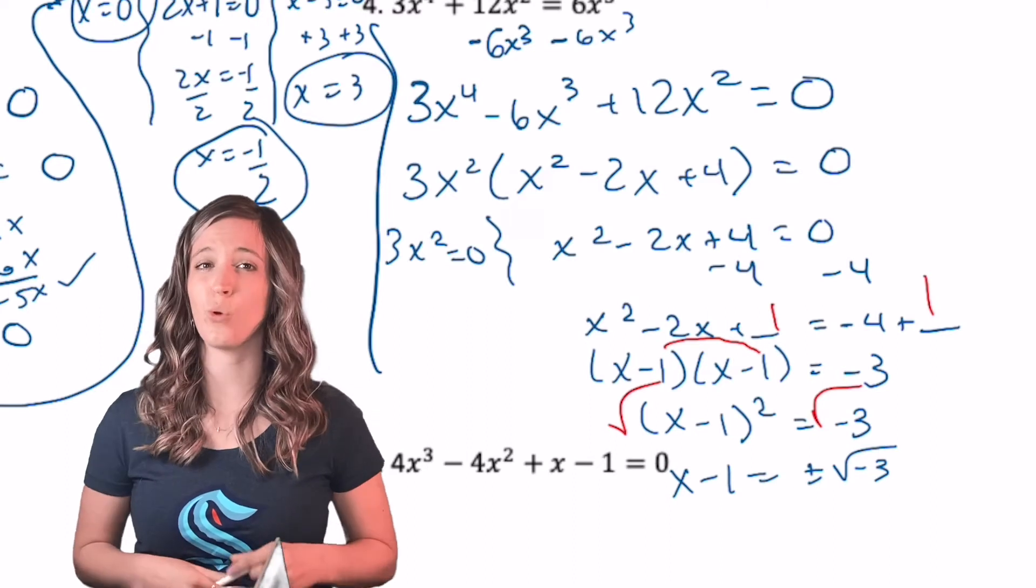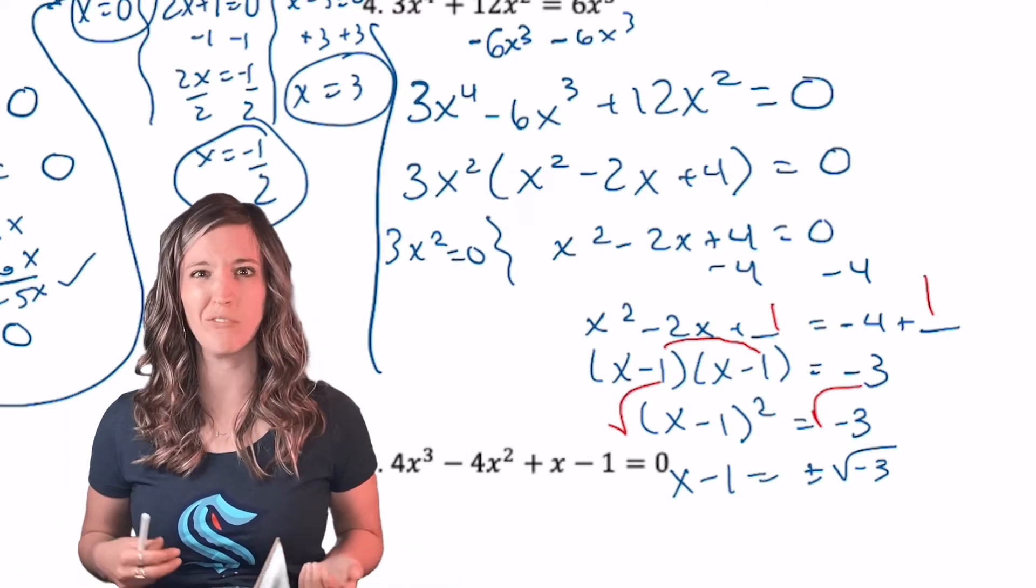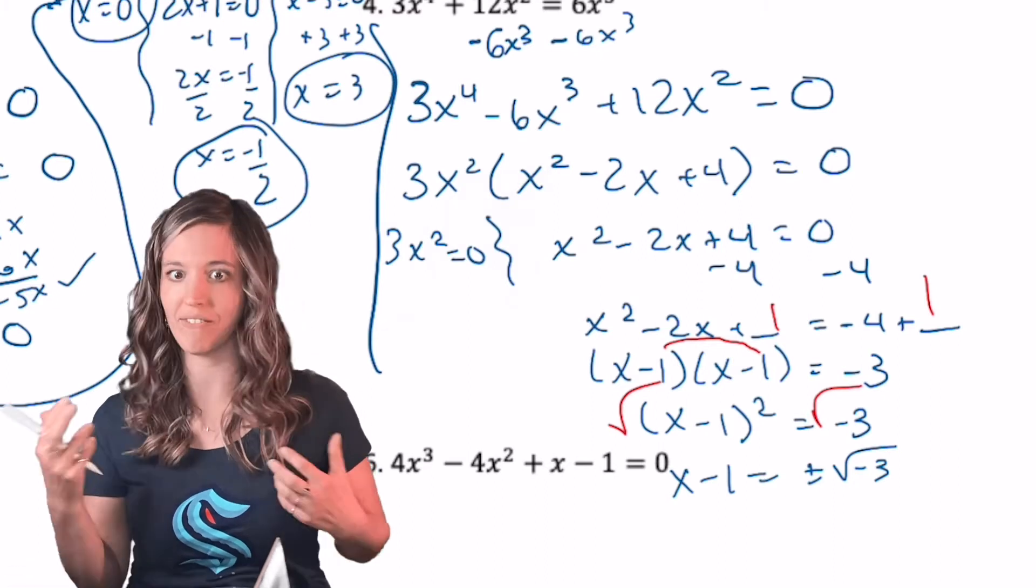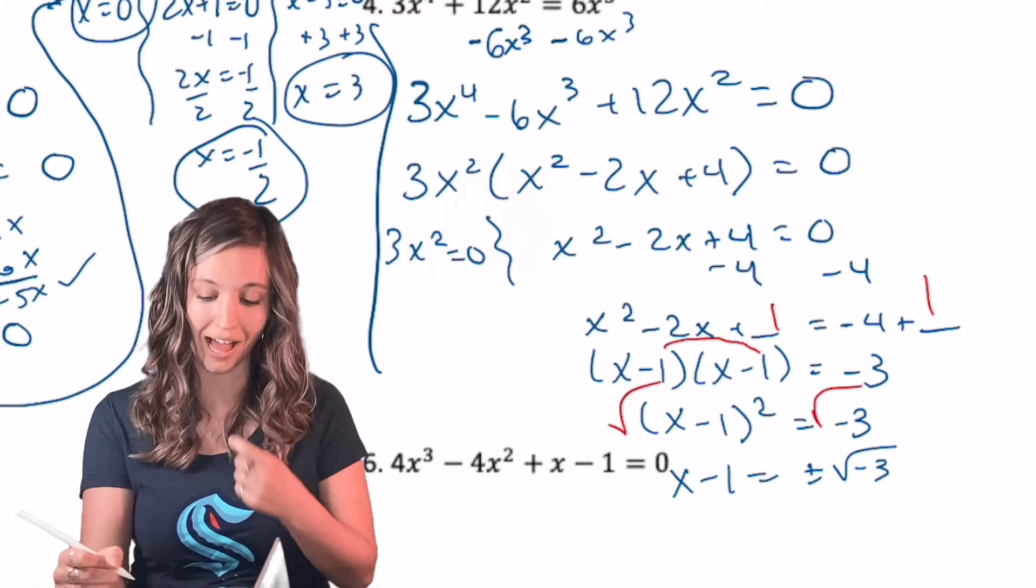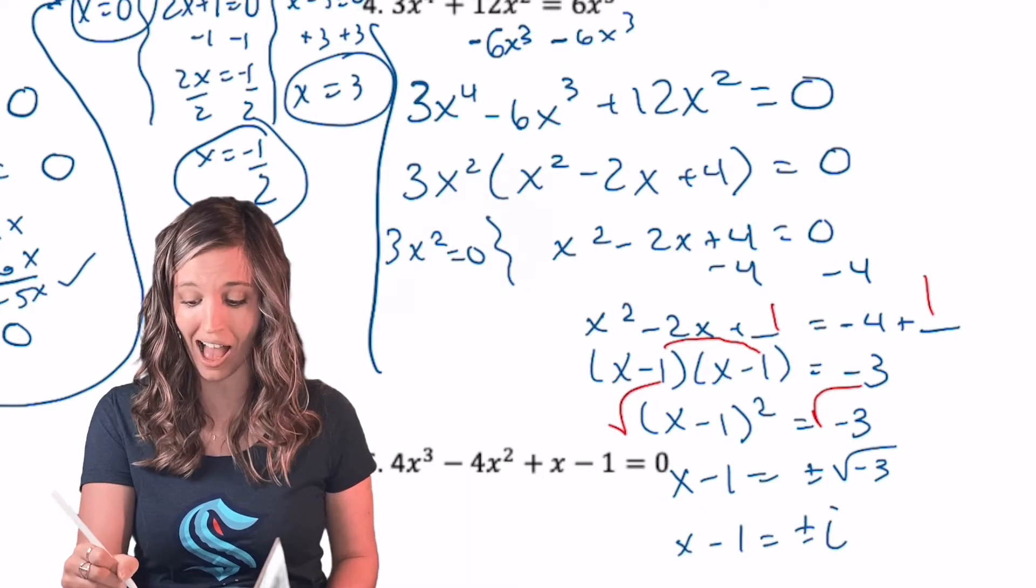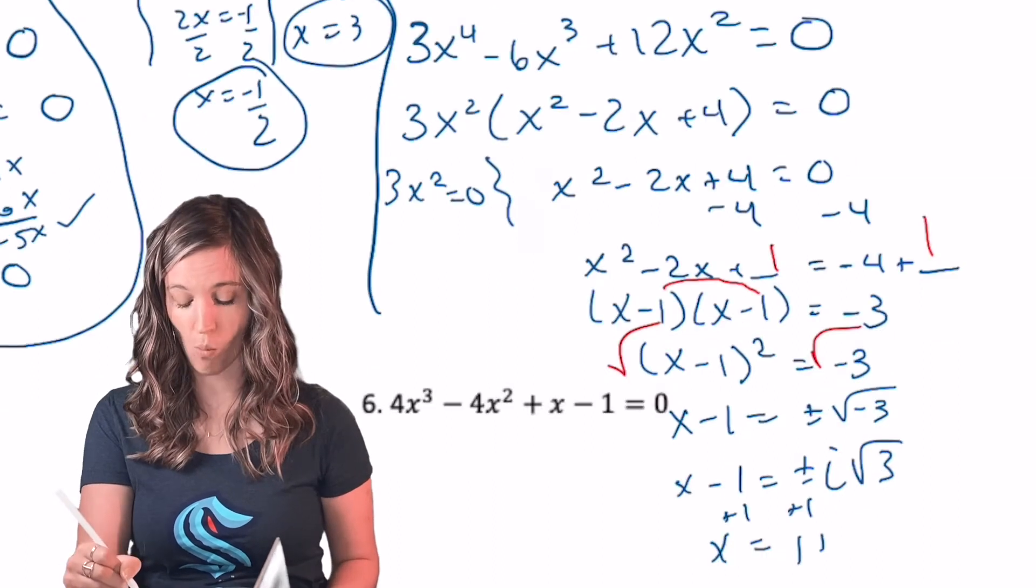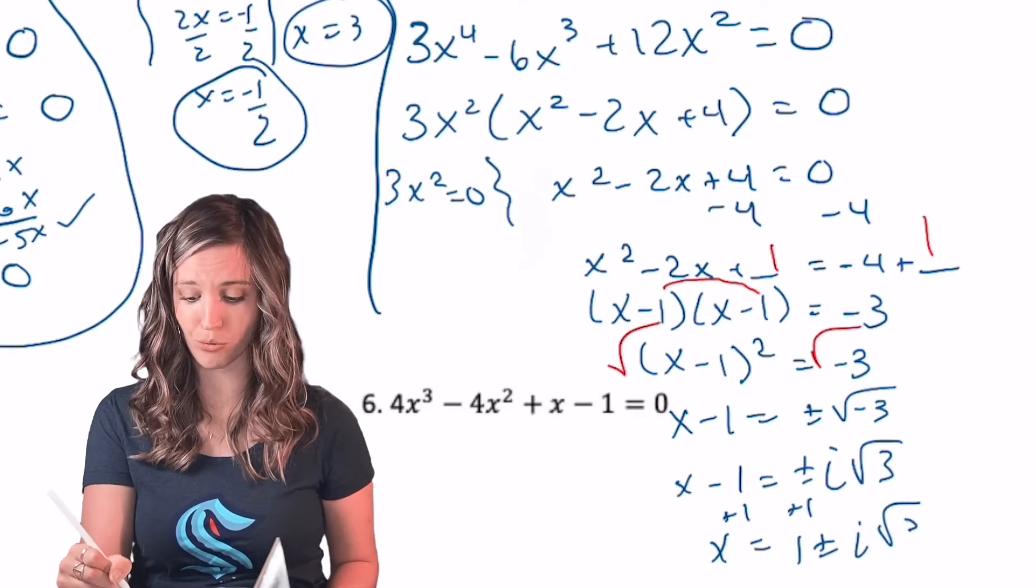So after I completed the square, I square rooted both sides and ended up with X minus one equals plus or minus the square root of negative three. Remember, we have that negative one under a square root. We can pull out an imaginary I. So X minus one equals plus or minus I root three. Add my one to the other side, and I can see two solutions there. One plus or minus I root three.